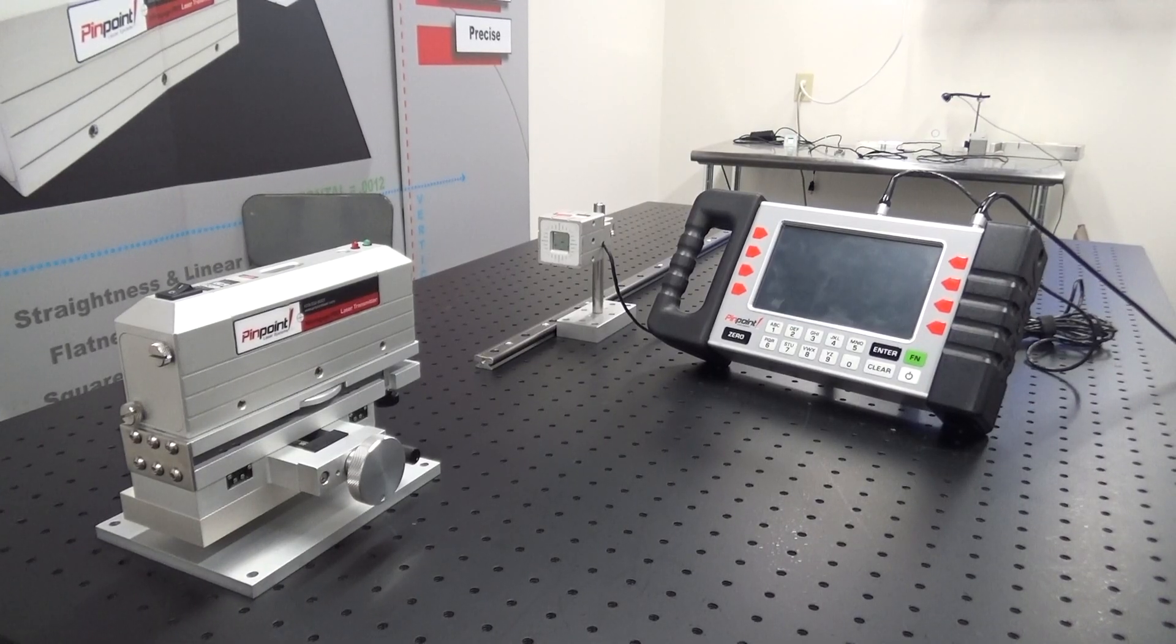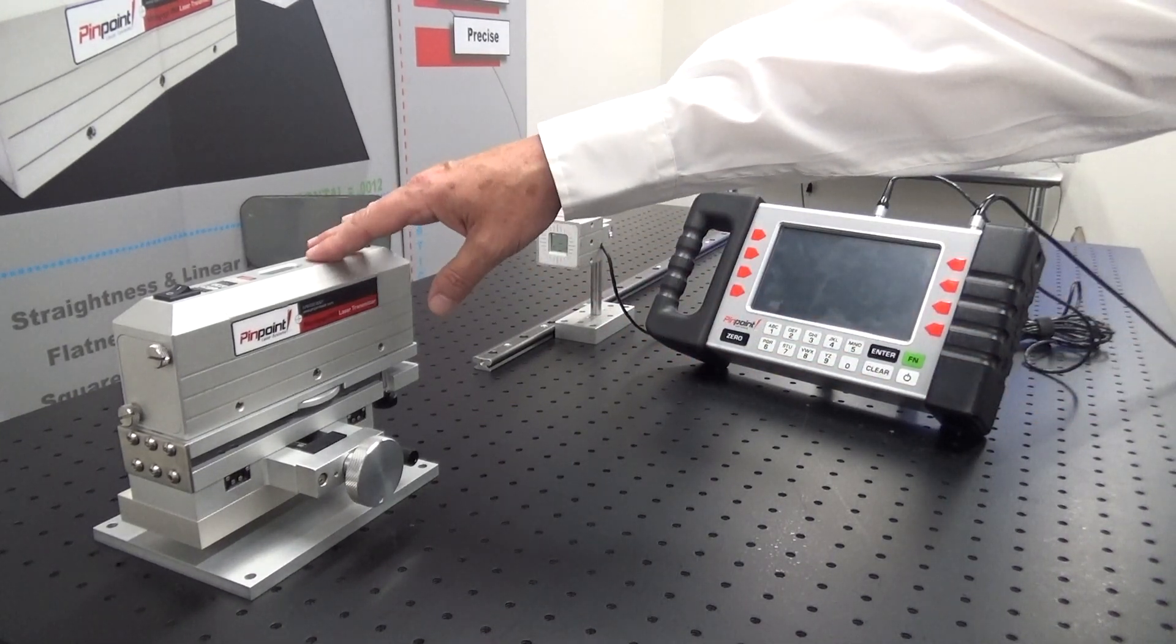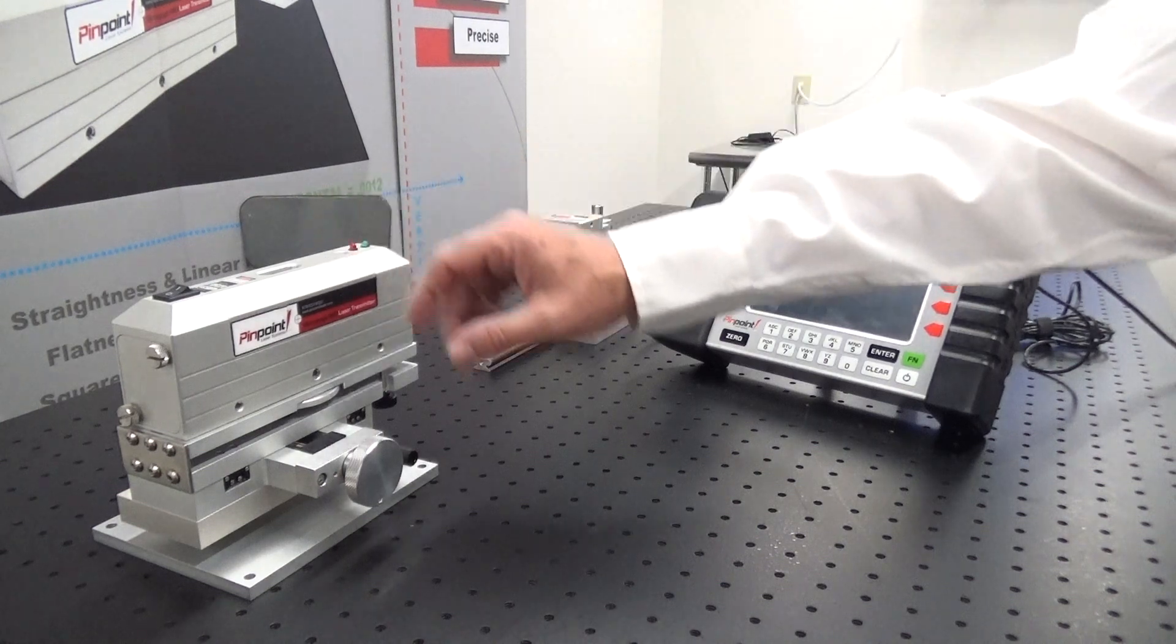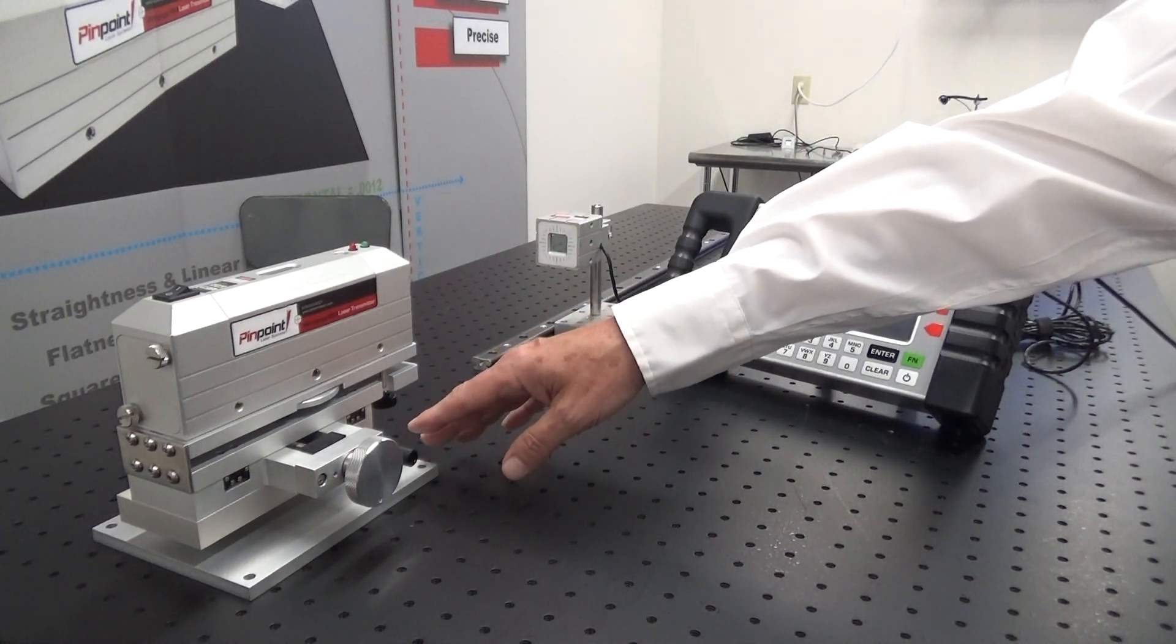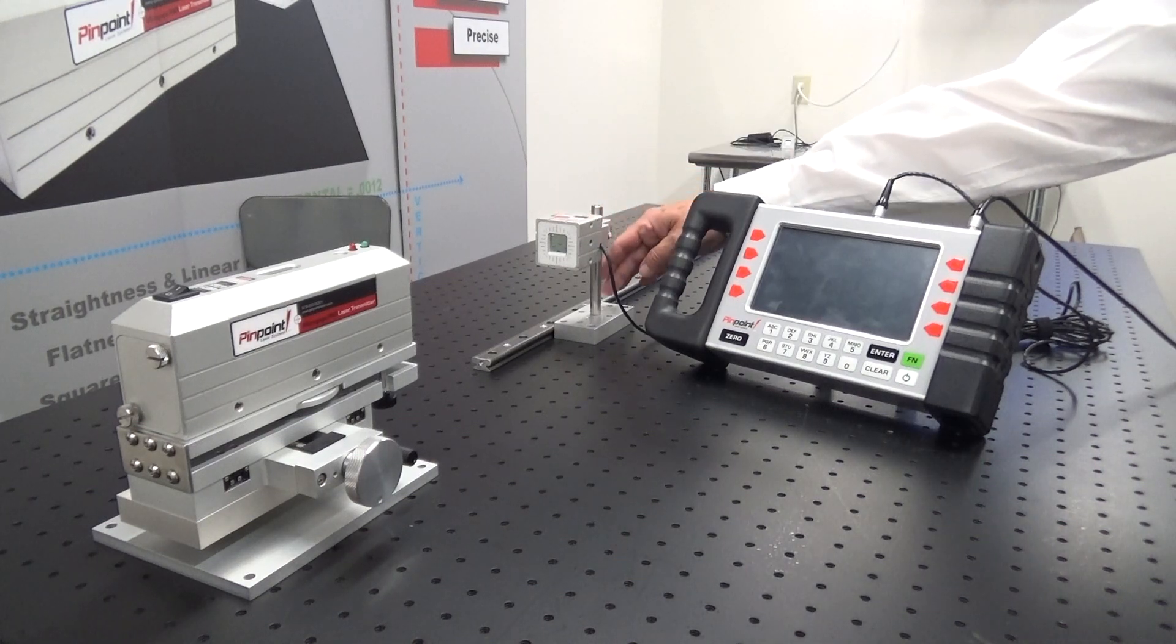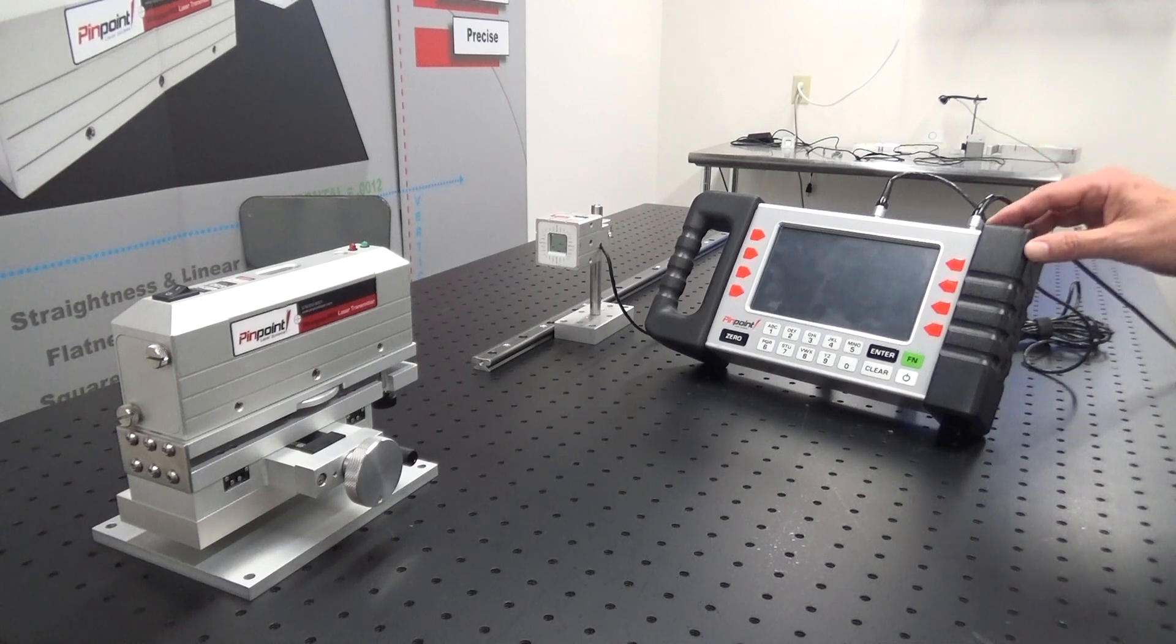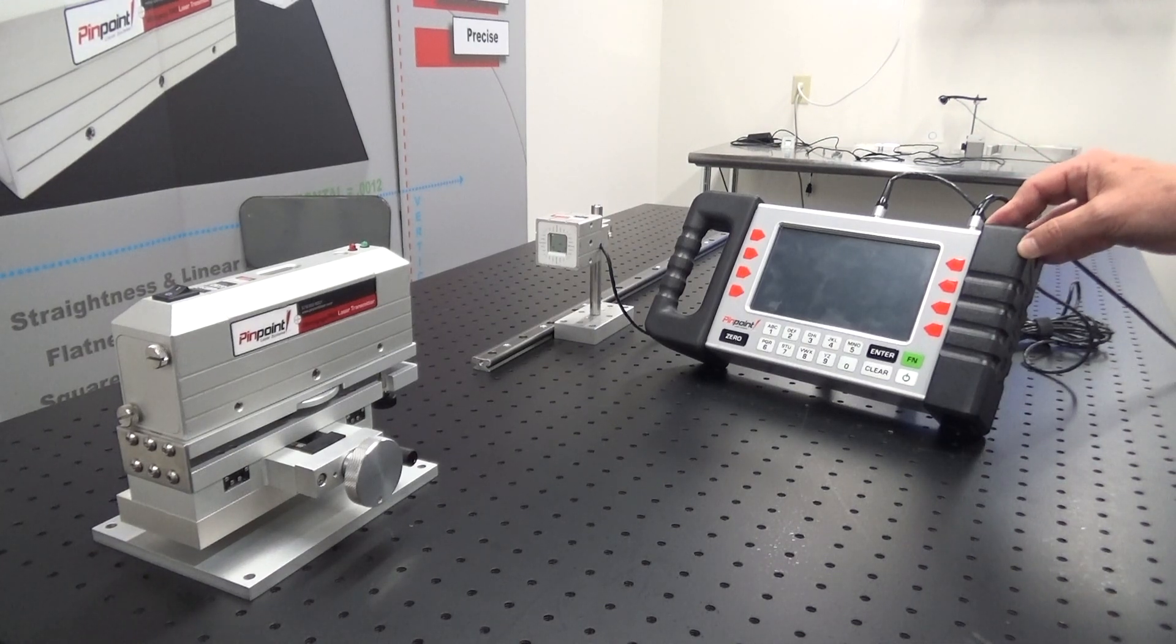The system we will be using is the MicroGauge Pro. Here we have the laser transmitter mounted on our 4-axis precision mount, our 2D or 2-axis receiver mounted on our standard adjustable mount, and our Pro smart system display.